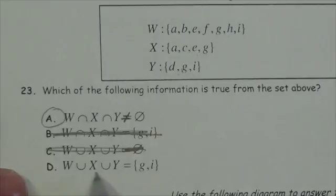The union of all three of those sets is definitely not the empty set because there's something in everything. And the union of these three is not G, I. There's way more to it than that. So yeah, the answer here is A.